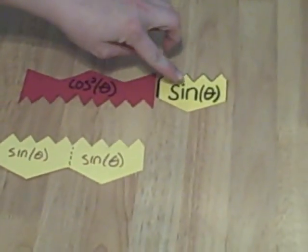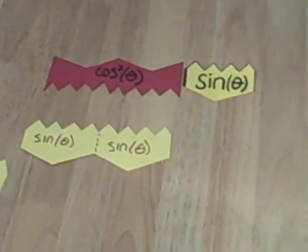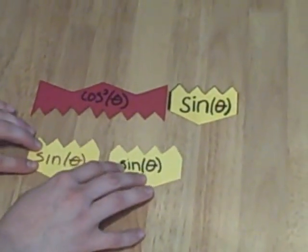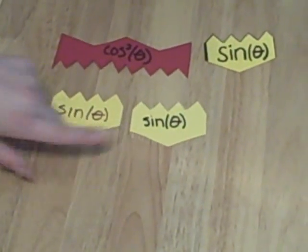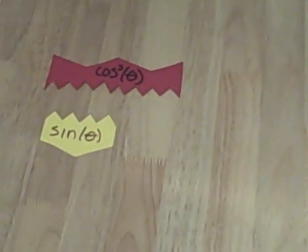We could flip over this to see that we have sine squared. However, since I see one sine in the numerator, I am actually going to replace this with my two individual sine manipulatives. Now, I have just a sine in the numerator and a sine in the denominator, so I can go ahead and cancel those out.